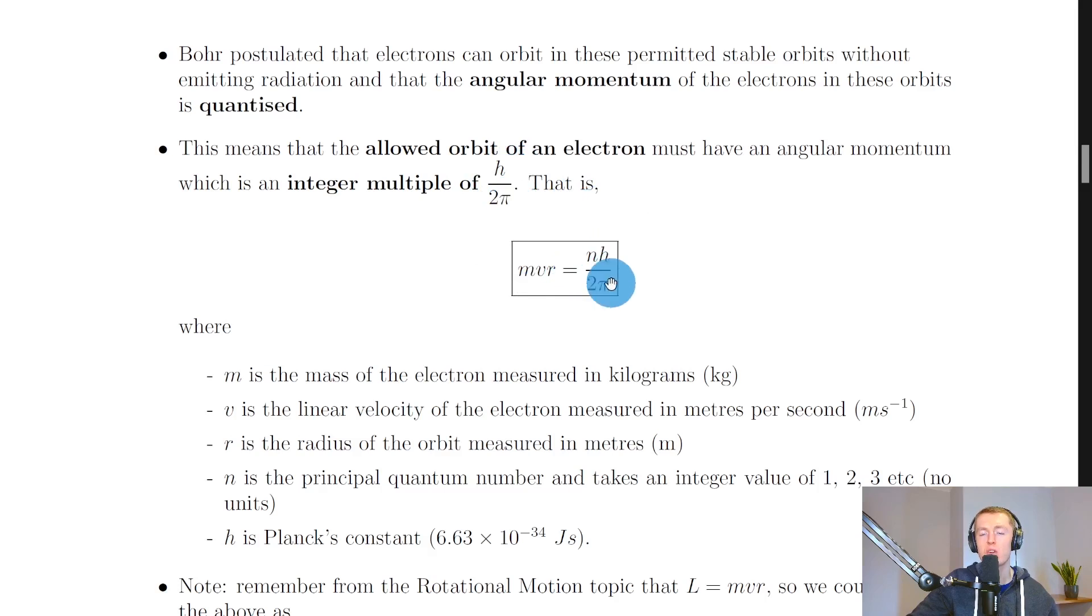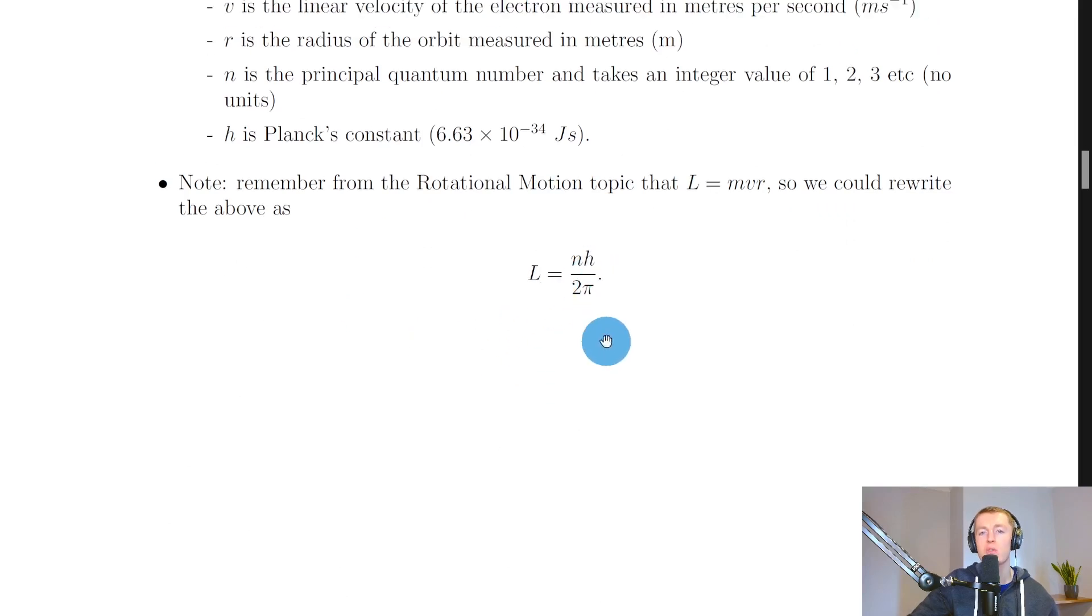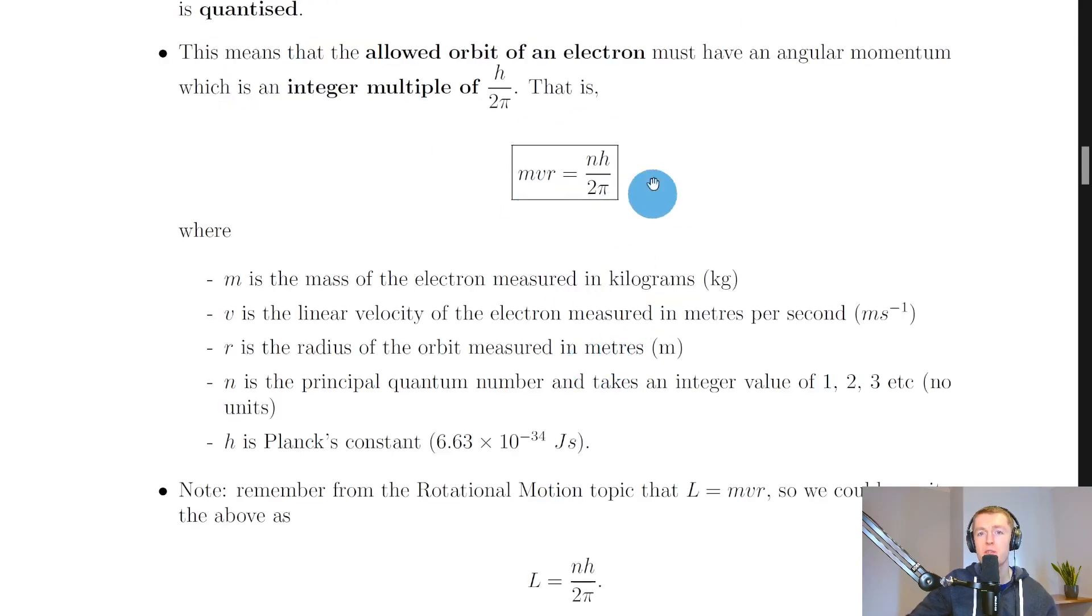we have mvr equals nh over 2π. Or if I skip down here, remember from the rotational motion topic the angular momentum has the symbol l and this was equal to mvr. So we can rewrite the above as l equals nh over 2π instead as a simpler form. So we have angular momentum l is equal to an integer value of Planck's constant divided by 2π. It's this integer multiple giving us the quantization. But this is the form that you'll see on the relationship sheet in the exam.